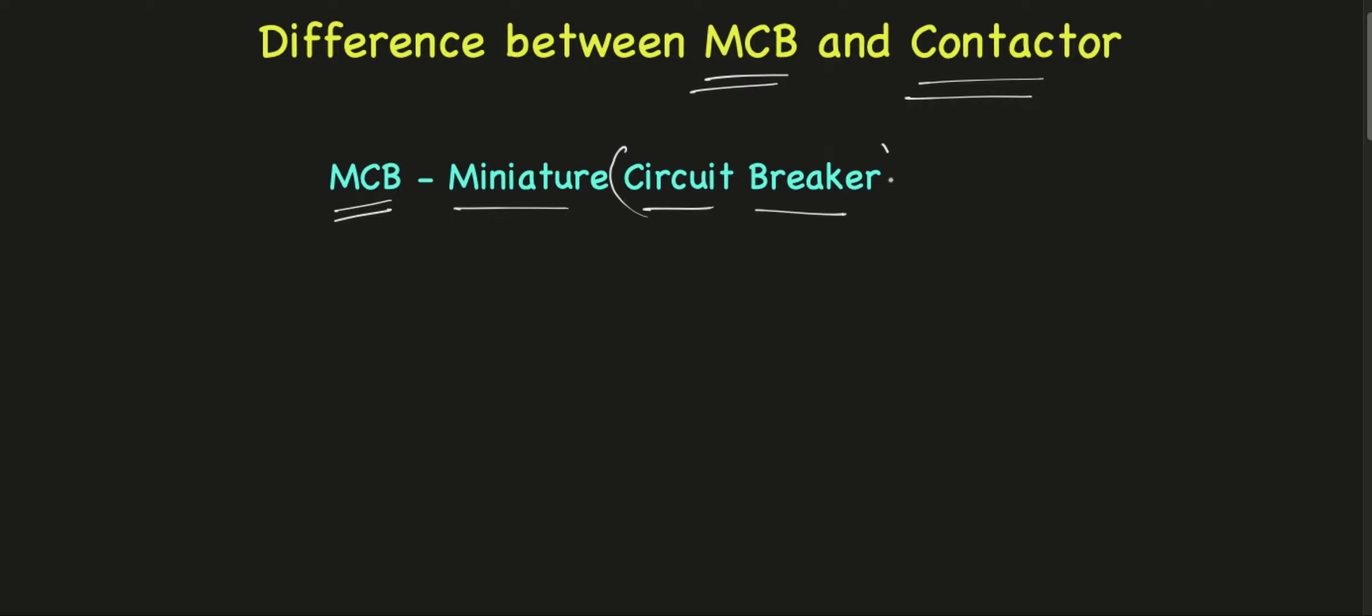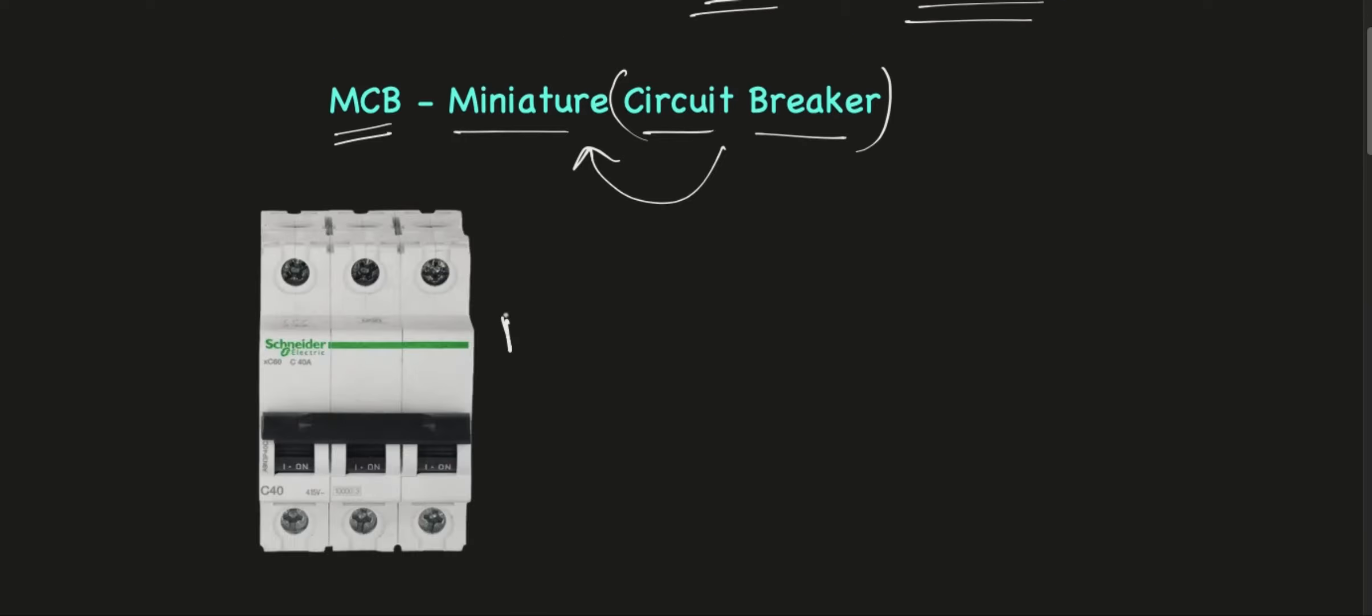From the abbreviation we can say that MCB is a circuit breaker in a miniature form. This is how an MCB looks like. We can say that the operation of an MCB and a circuit breaker both are same. It protects a circuit from faulty conditions.